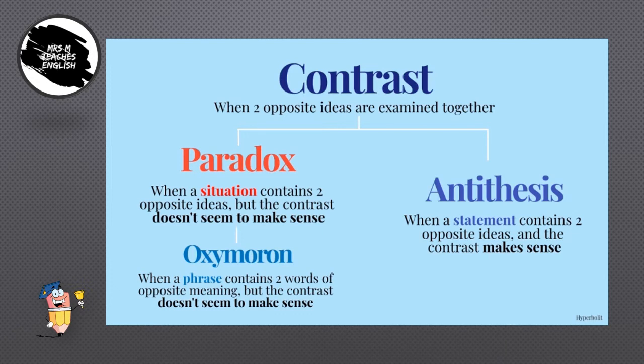All three of these terms — antithesis, paradox, and oxymoron — have to do with contrasting ideas. While antithesis refers to a statement which contains two opposite ideas and a contrast that makes logical sense, paradox refers to a situation which contains two opposite ideas but the contrast doesn't seem to make logical sense, until we understand the context.